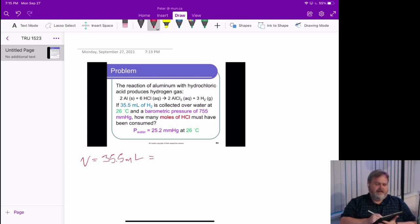We also have a temperature of 26 degrees Celsius, but of course we need that in Kelvin, that's 299 Kelvin. And a barometric pressure, and here's where we have to be careful, a barometric pressure of 755 millimeters of mercury.